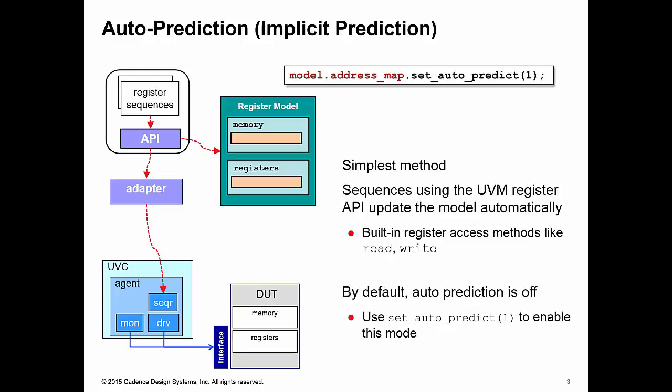By default, auto prediction is turned off, but it's easy to turn on. All we need to do is to call the set_auto_predict method of an appropriate address map for our register model and set the value to be equal to one.